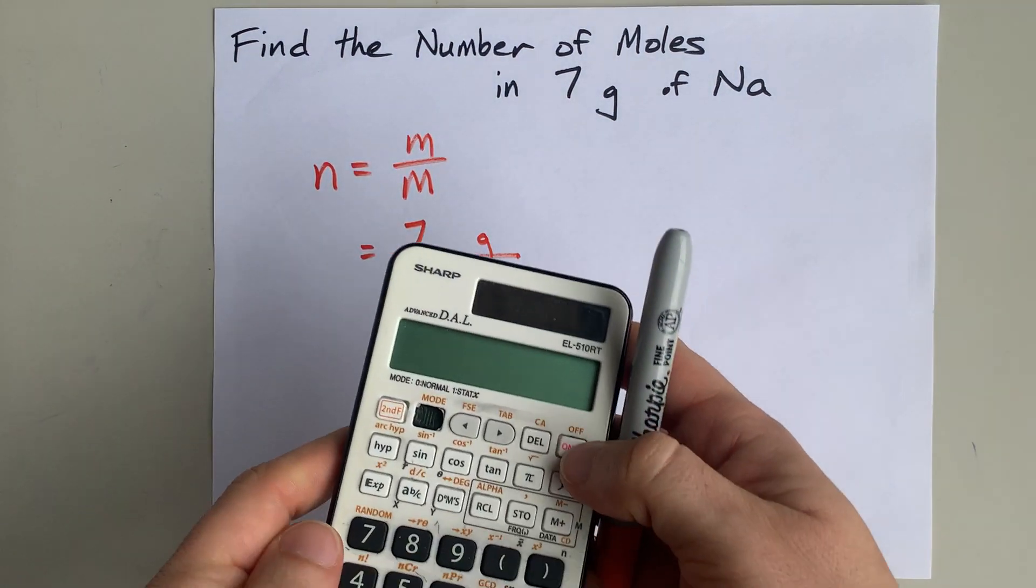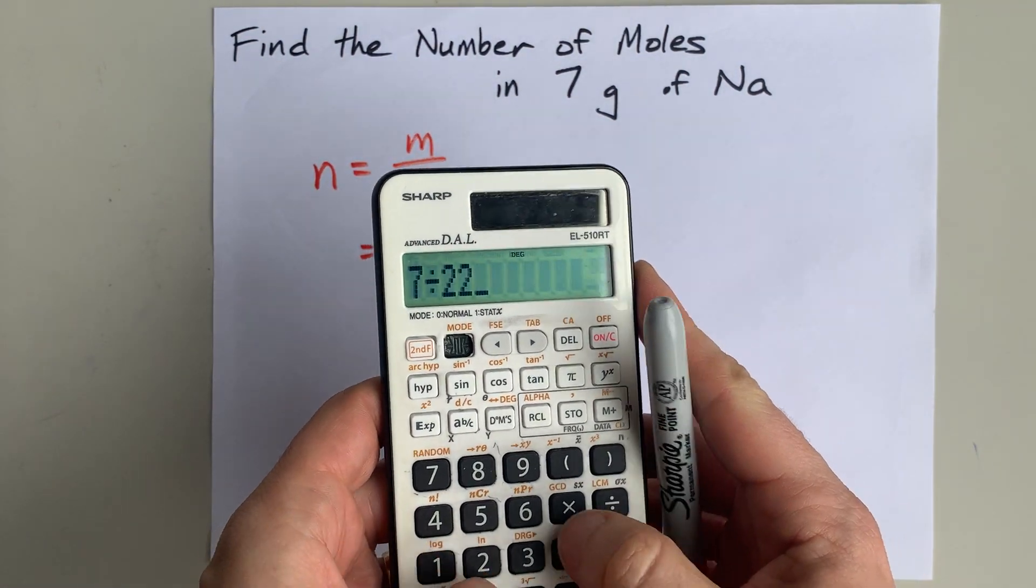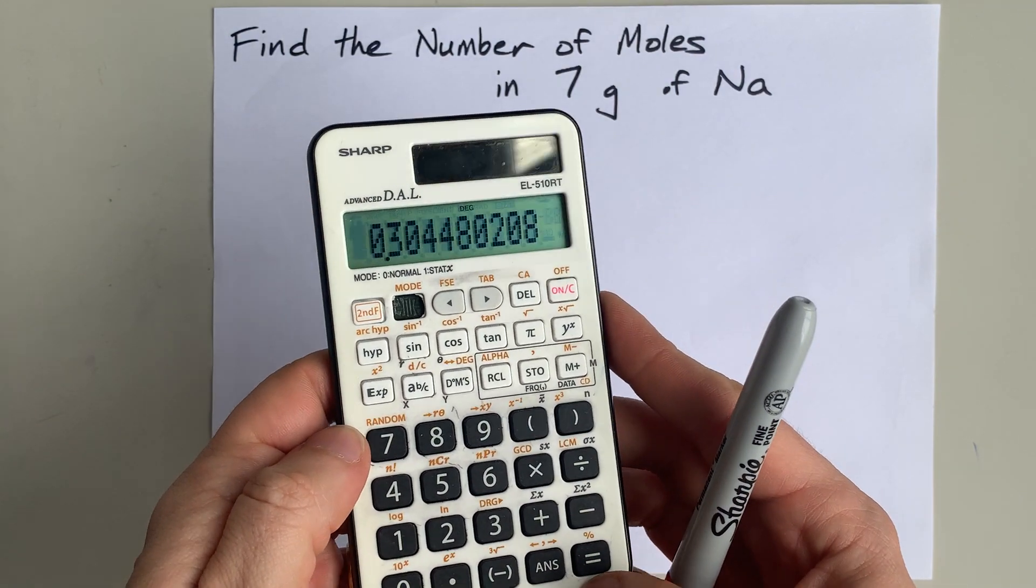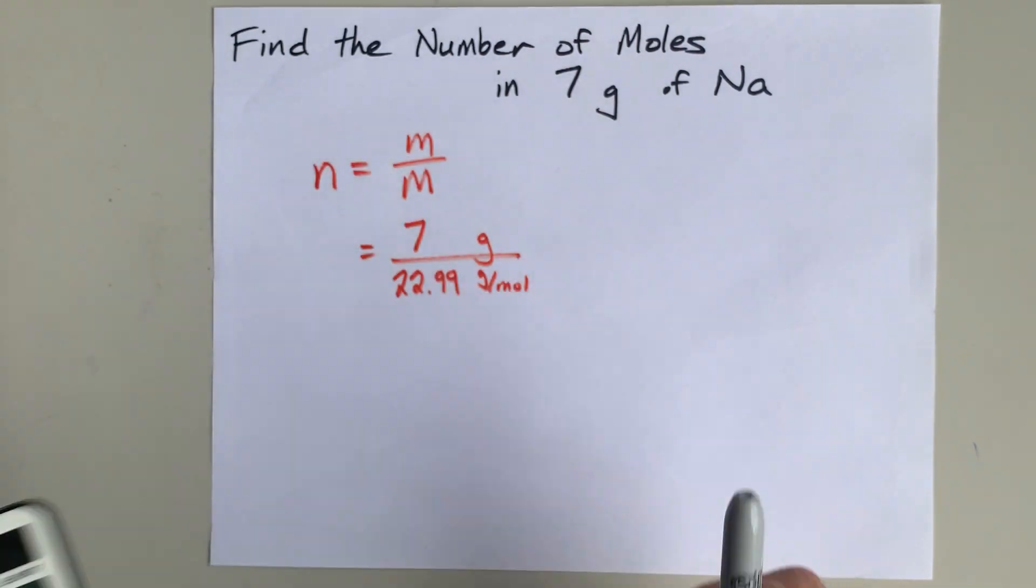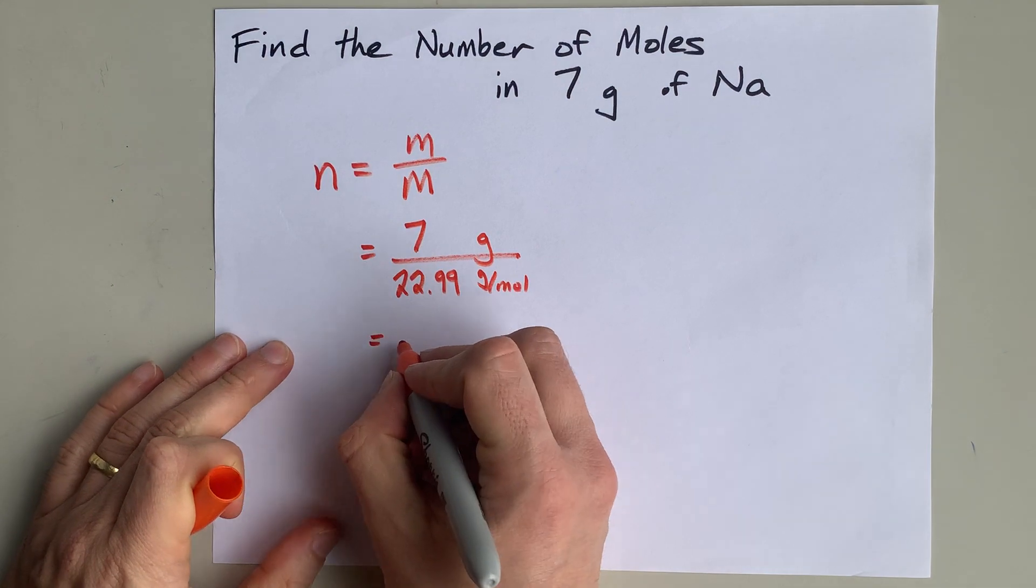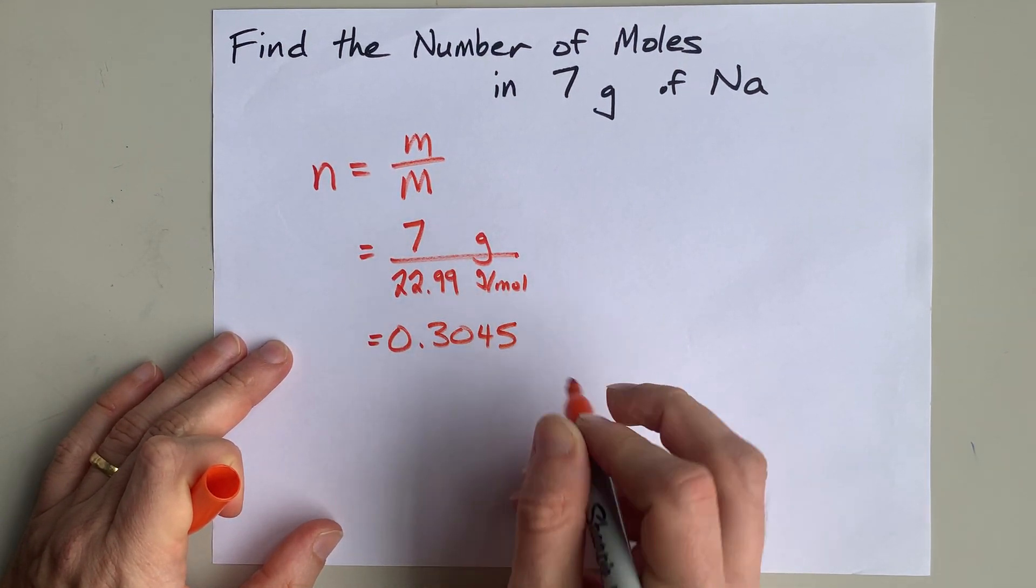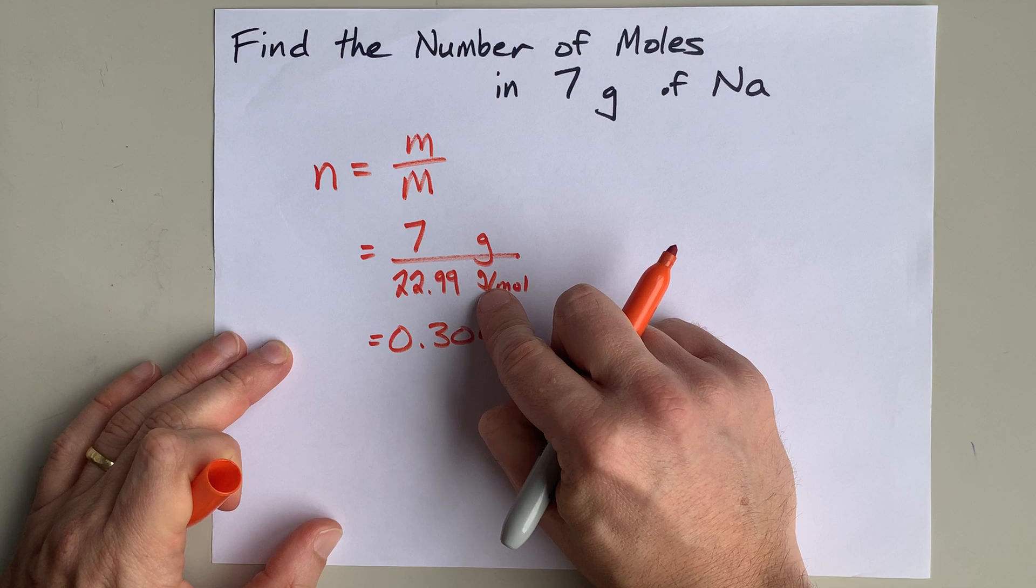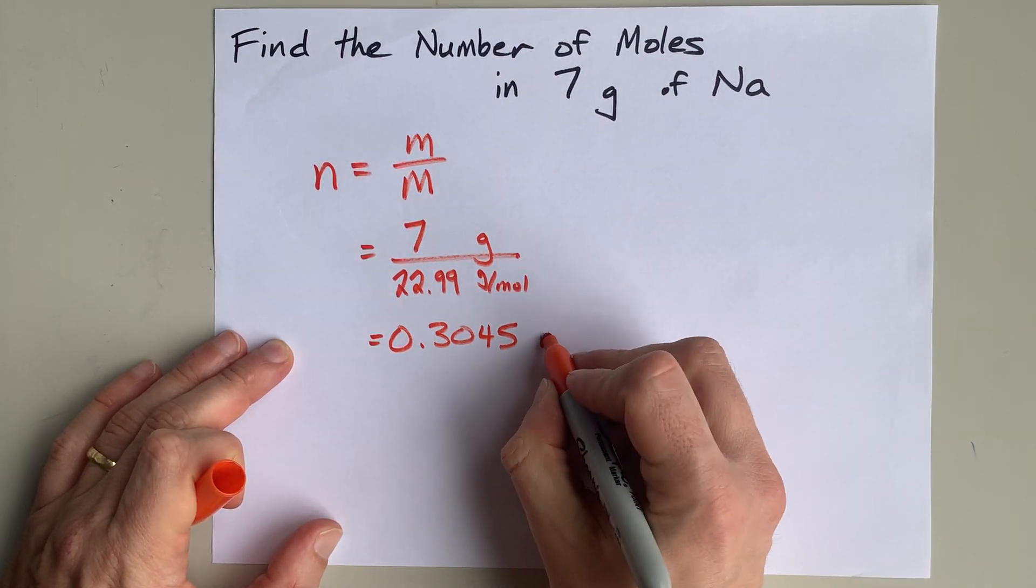7 divided by 22.99 will give me some number. The calculator says it's 0.3045. 0.3045. The units of grams cancel here, and I'm left with moles.